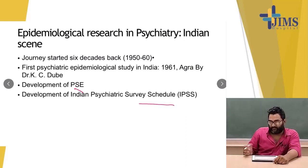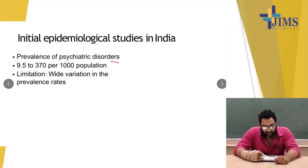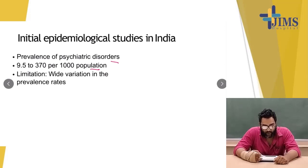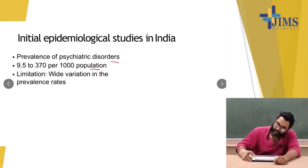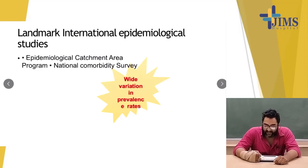Initial epidemiological studies in India found the prevalence of psychotic disorders to be 9.5 to 370 per thousand population suffering from psychiatric problems. However, there was a limitation due to the wide variety in prevalence rates. Landmark international epidemiology work was done through the Epidemiological Catchment Area program and the National Comorbidities Survey.